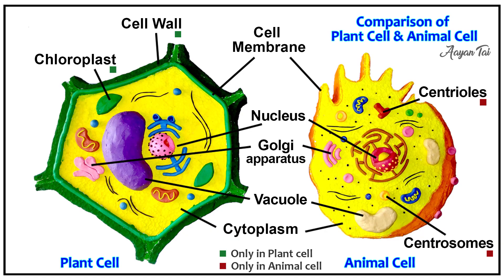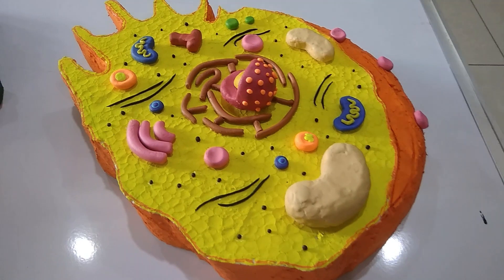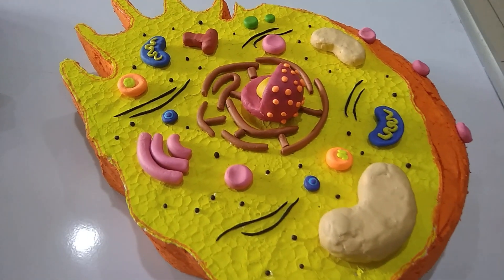Let's check this chart. We can find the differences between animal cell and plant cell easily. There are some other parts that are present in both cells.